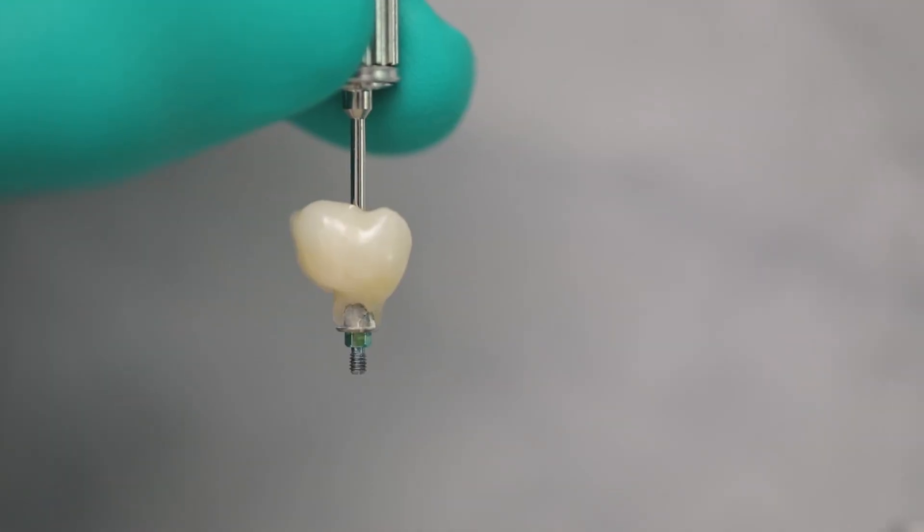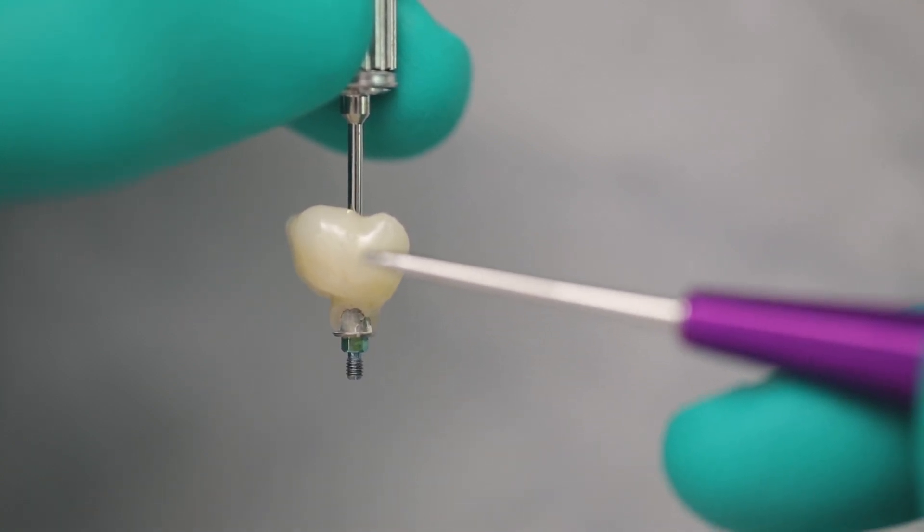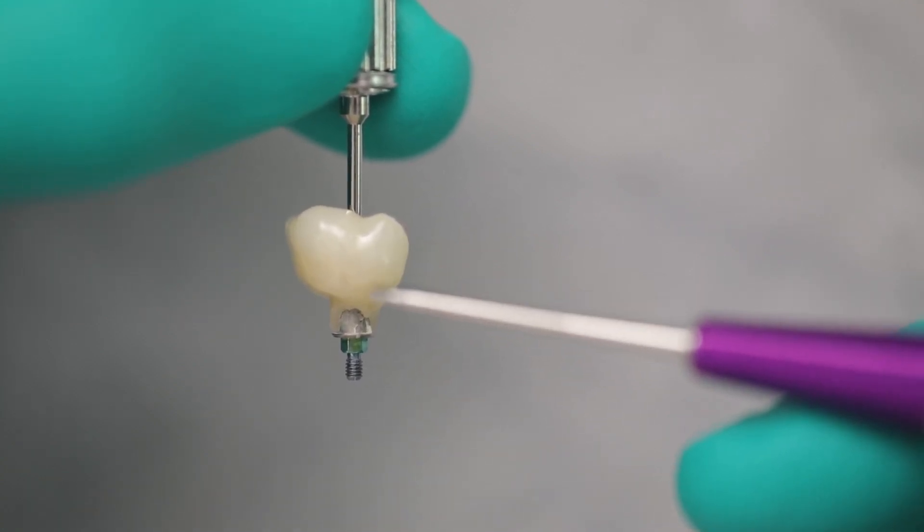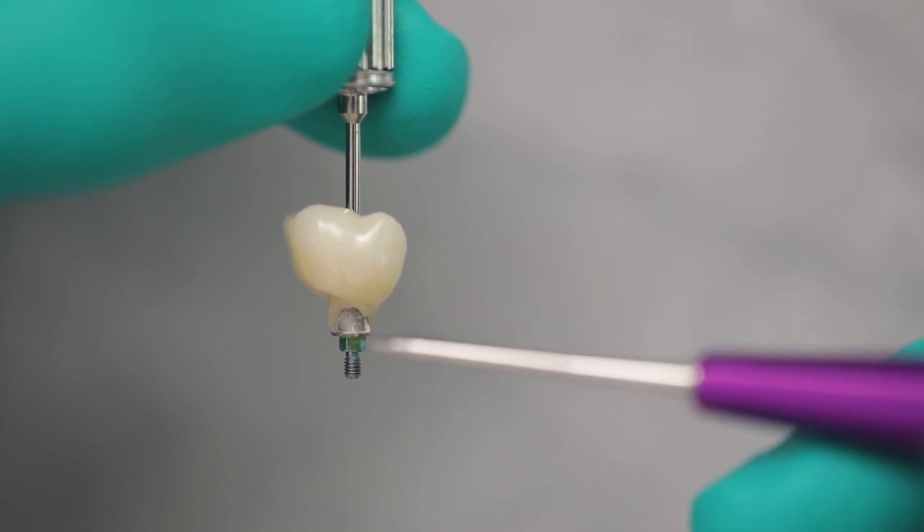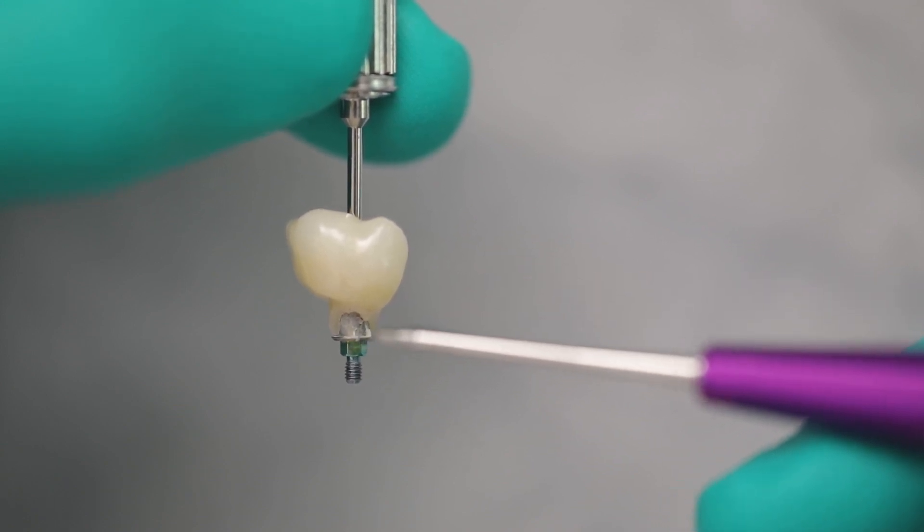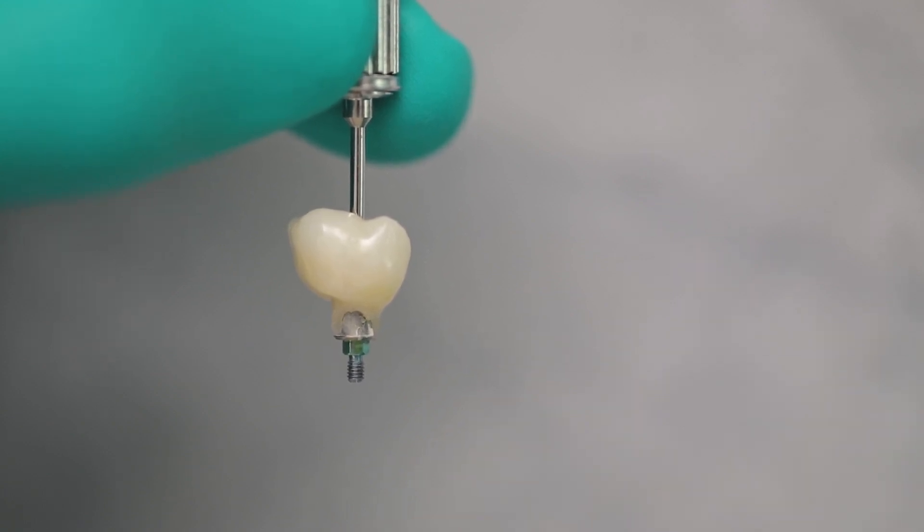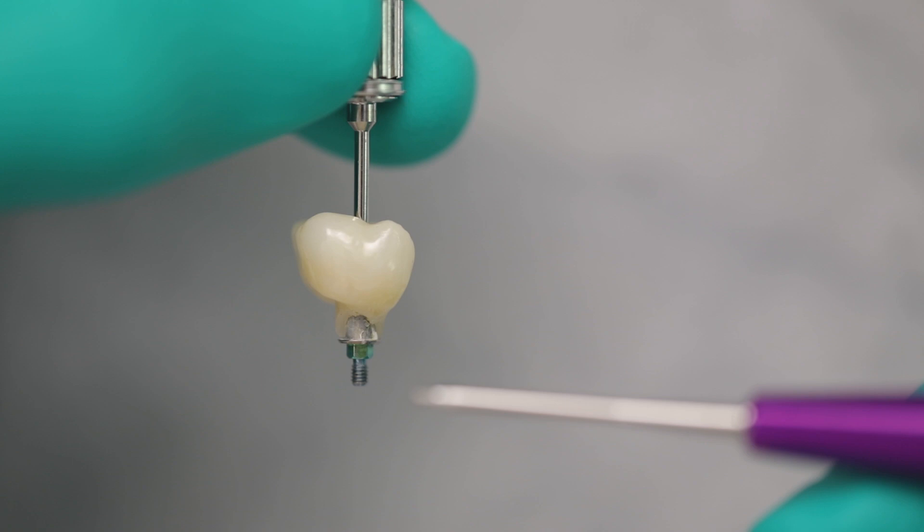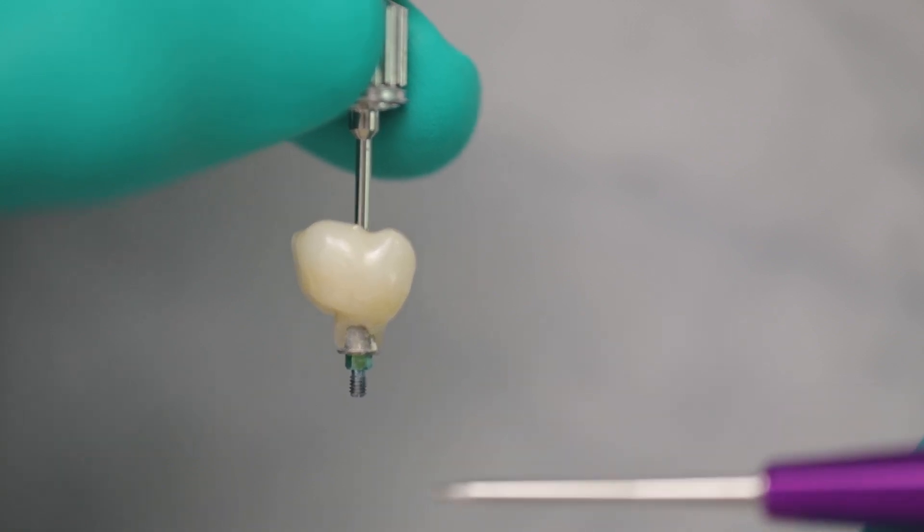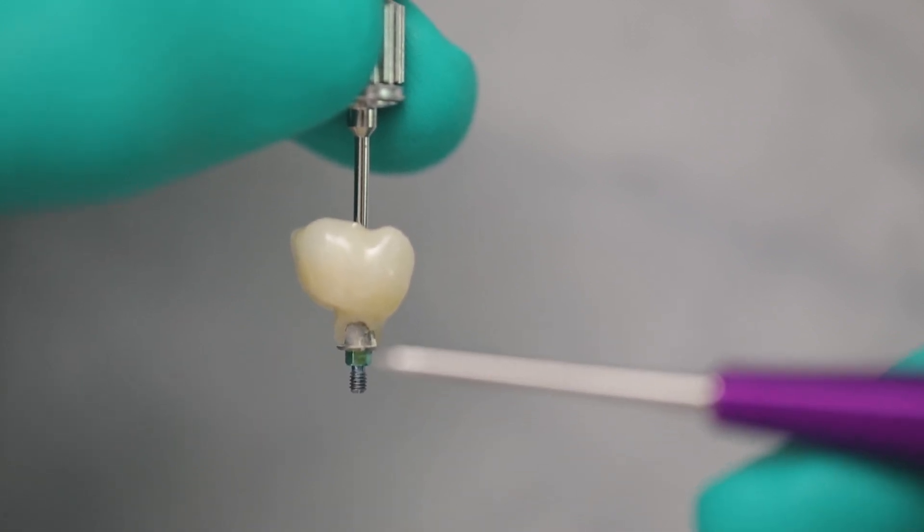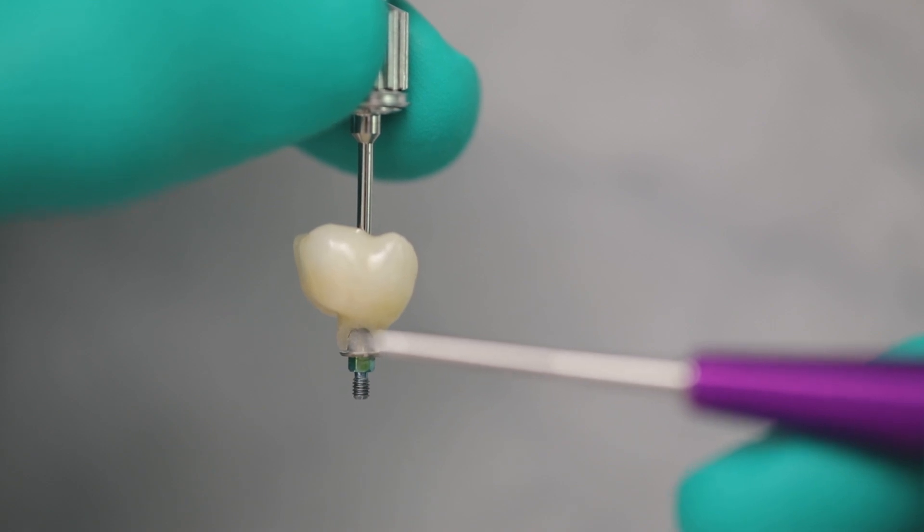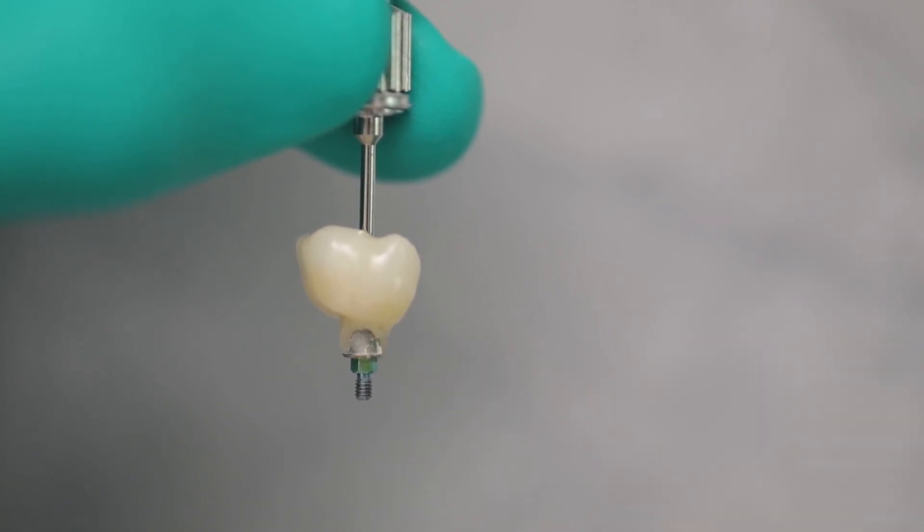So here's a very interesting case. In this particular case we have a restoration that was made out of zirconia, monolithic zirconia. It was cemented down onto a hybrid tie base and it wasn't in the mouth very long. It was only in the mouth, it was under a year, when the patient reported back and said that the tooth was loose. Once we took the tooth out of the mouth, you can see that the neck of the tooth here was broken.